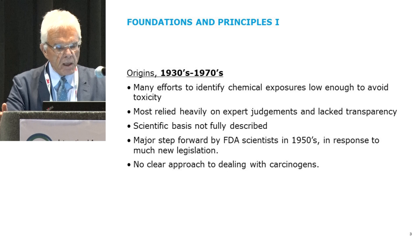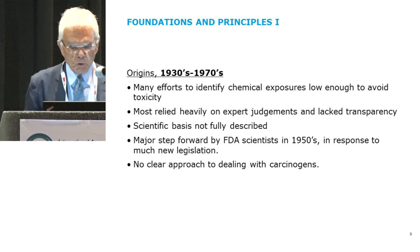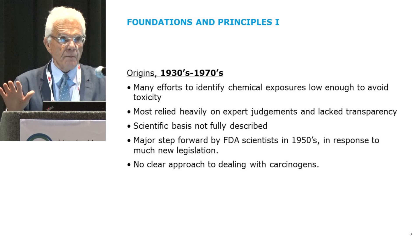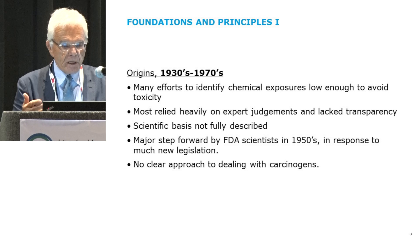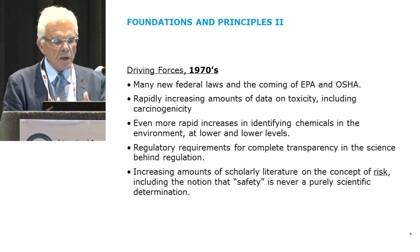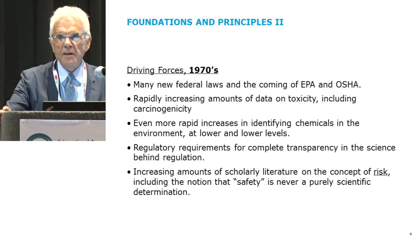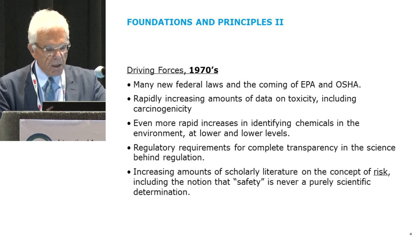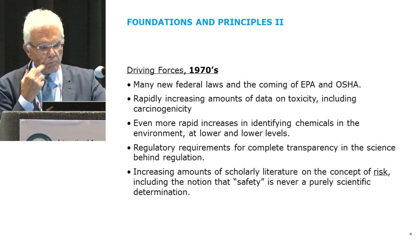The first major step forward came in the early 1950s with a group of FDA scientists who first formulated some fairly systematic approaches to dealing with chemical toxicity. Throughout all of this time, and for many years after, the issue of chemical carcinogens was avoided by most people—they were thought to have very special forms of risk and no one had a really good approach to them. The 1970s were an important era: lots of new federal laws in the US, EPA was founded, OSHA was founded, and lots of new data on toxicity and carcinogenicity were appearing at great rates. The chemists were going crazy finding lower and lower levels of everything in the environment, so it was a major era of considerable turmoil and uncertainty about what to do.